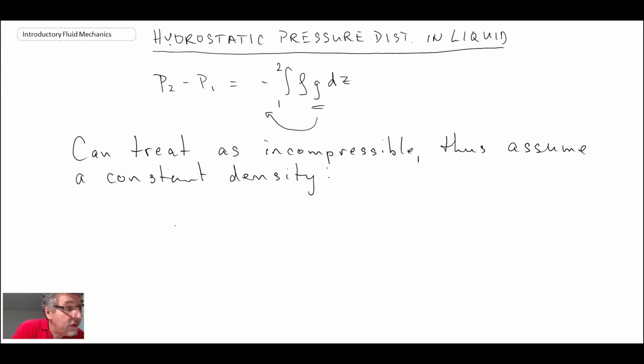What we're left with is p2 minus p1 equals minus rho g integral from 1 to 2 dz. That simplifies to z2 minus z1.